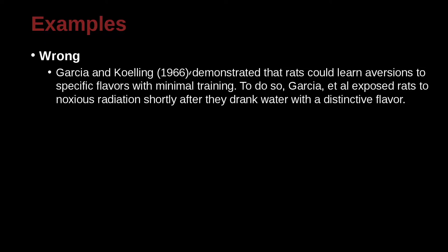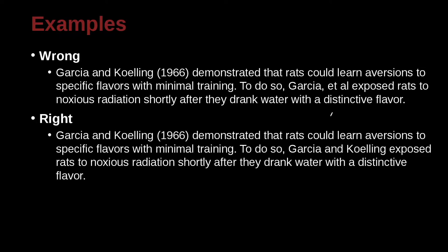Garcia and Kuling (1966) demonstrated that rats could learn aversion to specific flavors with minimal training. To do so, Garcia et al. exposed rats to noxious radiation shortly after they drank water with a distinctive flavor. We have Garcia and Kuling — two authors. We use A-N-D because it's outside the parentheses; we do not use the ampersand. The second time, we do not have the date because we don't need it in the same paragraph when names are outside parentheses. And you do not use 'et al.' for just two authors — 'et al.' is for three or more.